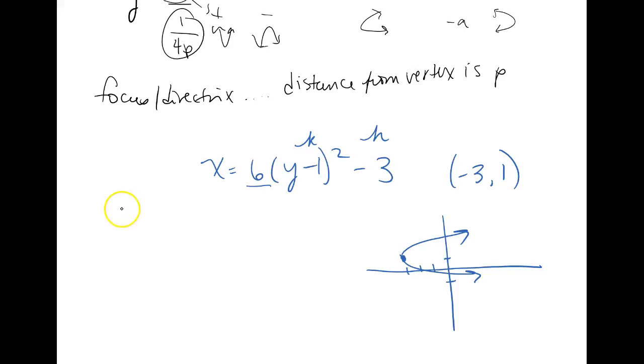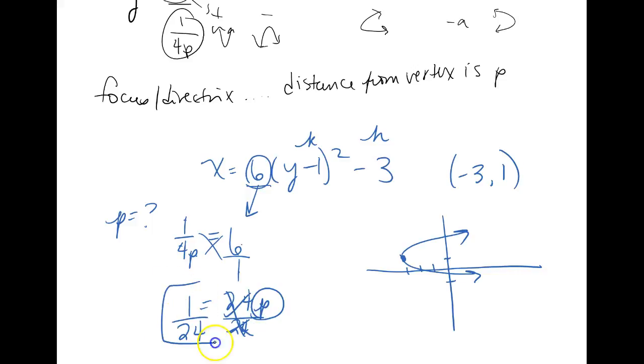Now the focus and the directrix, I'm going to need to find P first so that I can put them in the right place. And the formula that we have is 1 over 4P is the same thing as whatever is in the A position on our function. Now A was just the dilation, guys. So I'm just going to stick this 6 right here in this formula and then I'm going to solve. Now if you're like wigging out, like how am I supposed to solve this? Well, just put this over 1 and cross multiply. Just do a proportion. Okay. So 1 times 1 is 1 and then 4P times 6 is 24P. Now how do I solve for P? Well, I divide both sides by 24. Okay, so now I'm getting that P is 1 over 24.